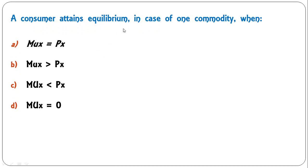Next: 'A consumer attains equilibrium in case of one commodity when' — MU(X) equals price of X; MU(X) greater than P(X); MU(X) less than P(X); or marginal utility equals zero? The correct answer is A: marginal utility of X should be equal to the price of commodity X.